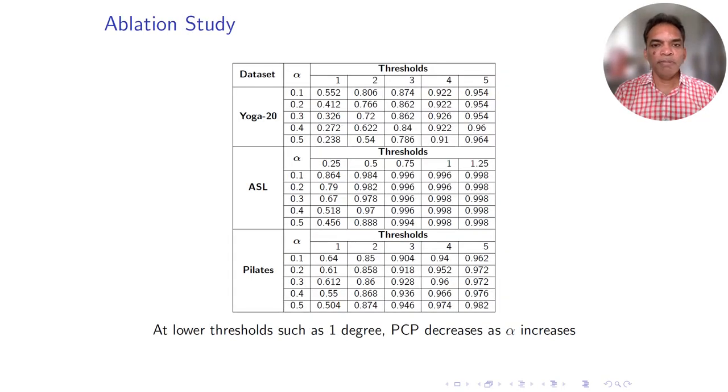Here is an ablation study with varying alphas of the weighted PCE. If you see, the higher the alpha, the lesser the penalty. The penalty is one minus alpha—the penalty for correcting already correct joints. So if the penalty goes down, the performance must go down. Hence you could see that the PCP values have started coming down. This is the same phenomenon across all three datasets, which is in line with our approach.